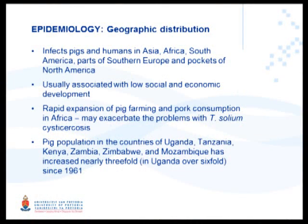The disease occurs more frequently in low-income, low-economic areas. Due to the rapid expansion of pig farming in Africa, it is increasing - we're finding it more and more. Pig populations, since 1961, have more than tripled.